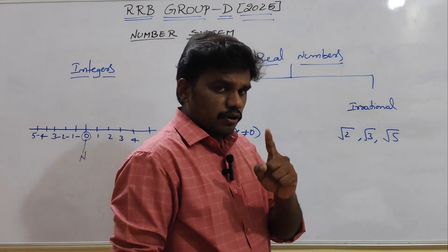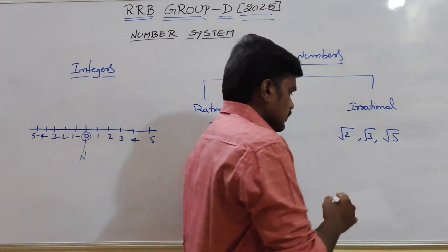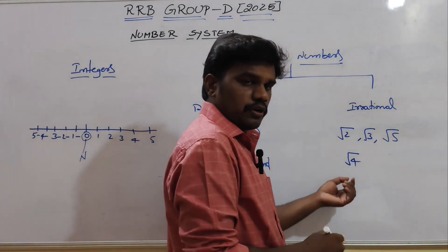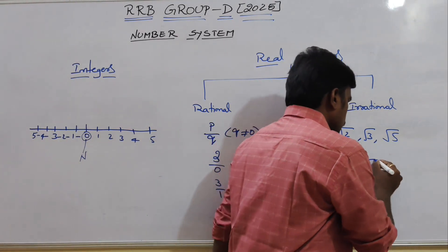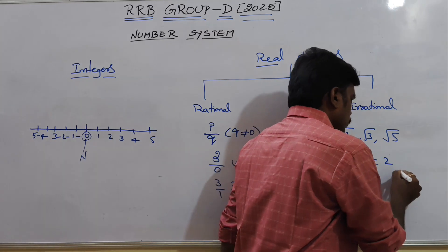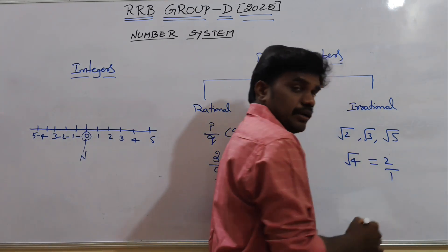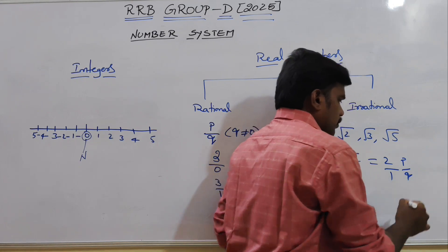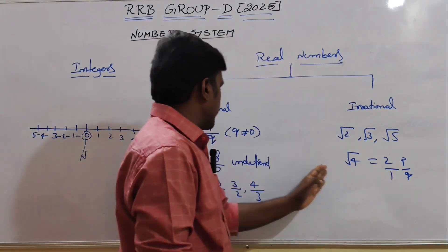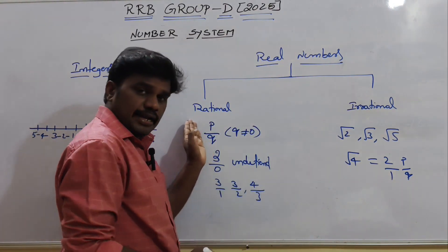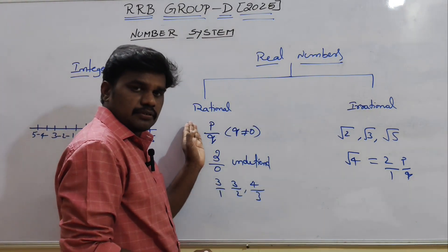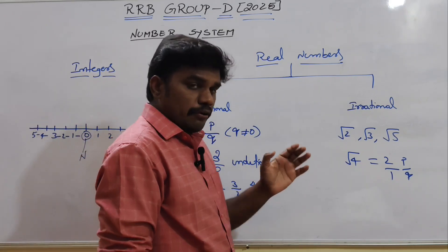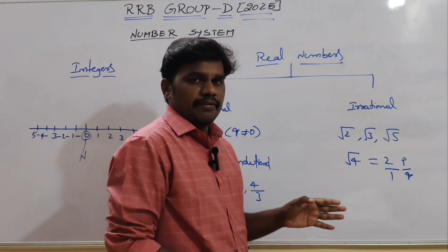Everybody has one doubt: why isn't root 4 an irrational number? Root 4 is equal to 2, which can be written as 2 by 1 — like P by Q. So root 4 is a rational number. You have to identify numbers this way.